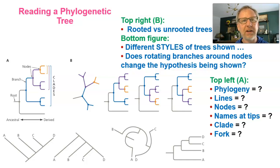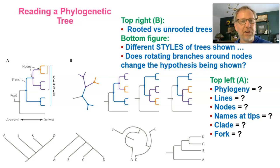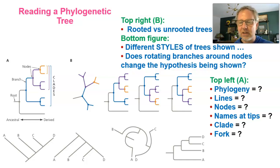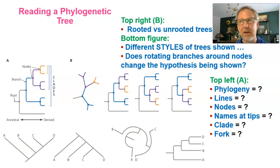Let's take time to review how to read and interpret a phylogenetic tree. Figure A shows a branching diagram with lineages — the lines — in different colors to represent different lineages. A phylogeny is basically an evolutionary tree; it's the evolutionary history of a group of species, a lineage. We've already gone over what the lines represent: the lineages that make up this tree.